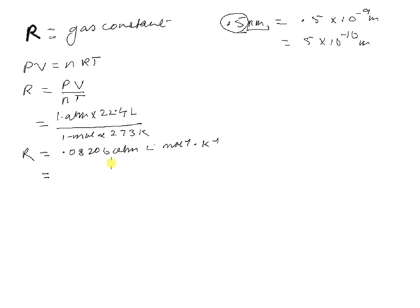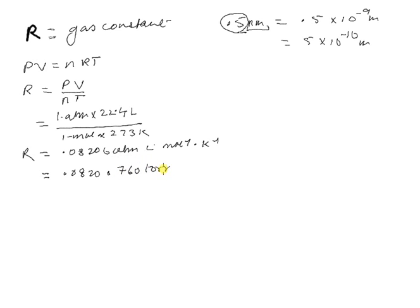Similarly, we have 1 ATM, 1 liter, 1 mole, and 1 Kelvin in our expression for R. If a numerical problem gives pressure in Torr, you don't have to remember a separate value for R. Just convert: ATM can be replaced by writing 760 Torr, while liter, per mole, and per Kelvin remain the same.